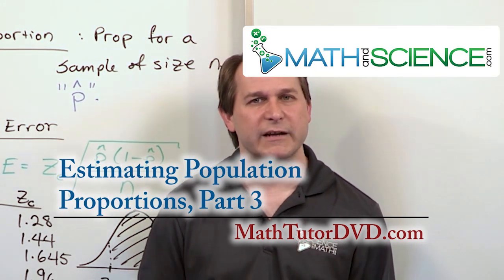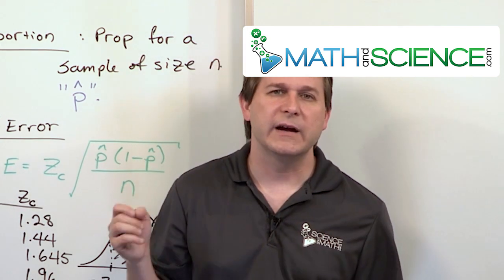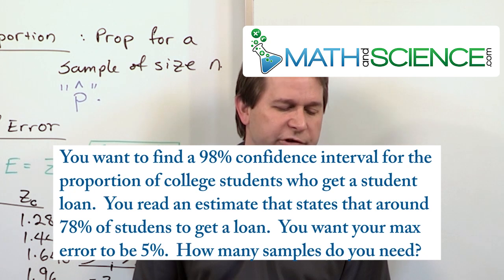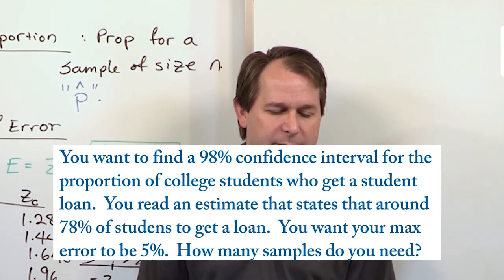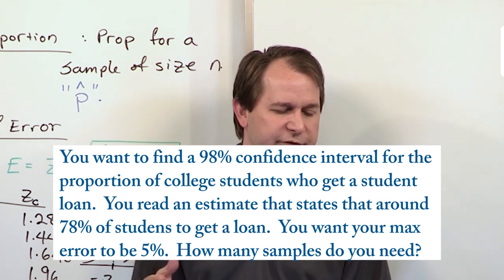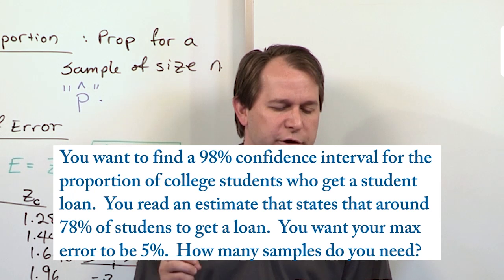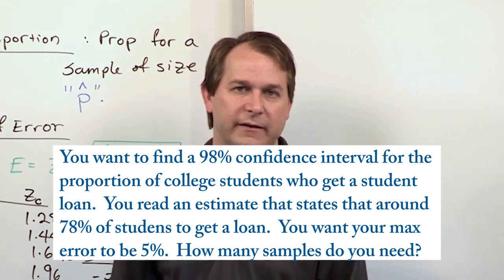This will be a little bit of a different type of problem to illustrate something unique. The question is: you want to find a 98% confidence interval for the proportion of college students who get a student loan. You read estimates that around 78% do get a loan, but you want your max error to be around 5%. How many samples do you need?